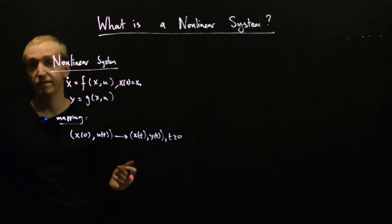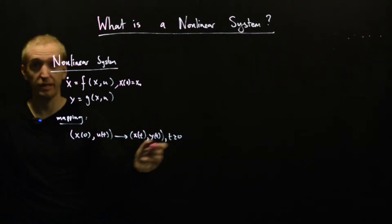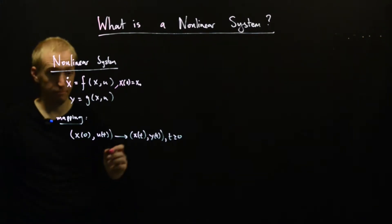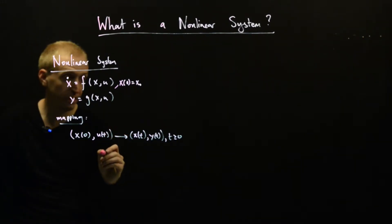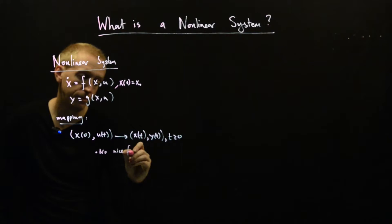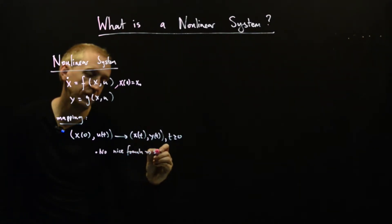Unlike in the linear system case, there'll be no nice formula for what x and y will be. In fact, you're generally forced to simulate. There's no nice formula, which really means that you need to simulate.